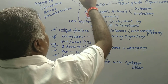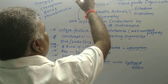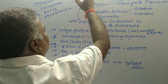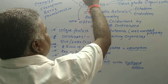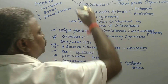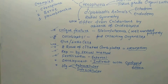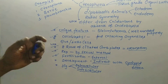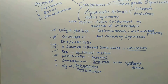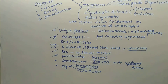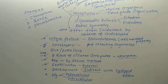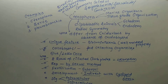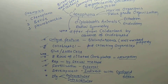Radial symmetry means the body can be cut into two equal halves by passing a plane through the oro-aboral axis. This is a very important chapter and all these points must be remembered.